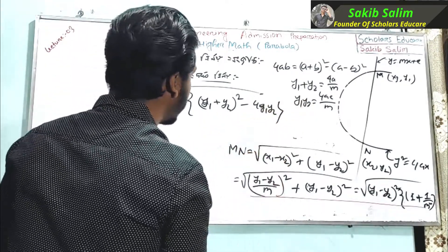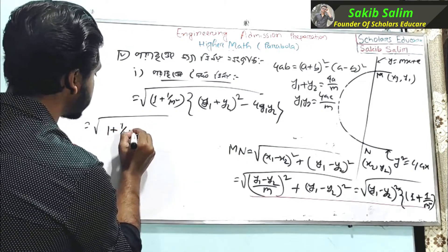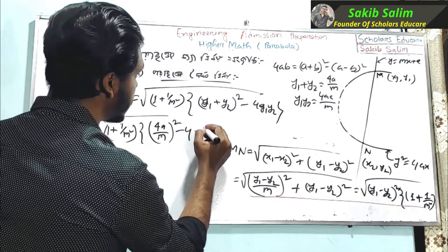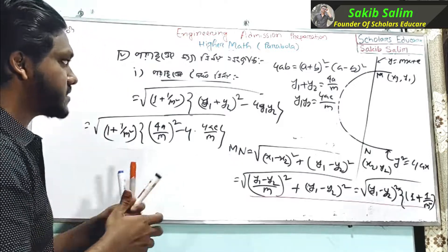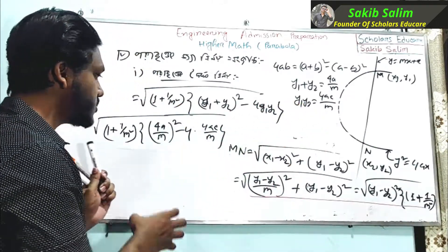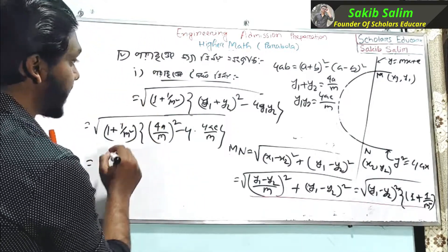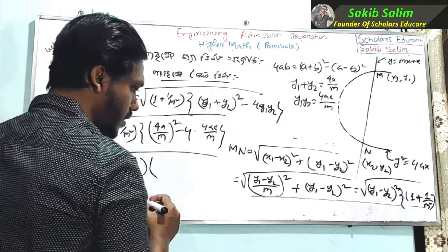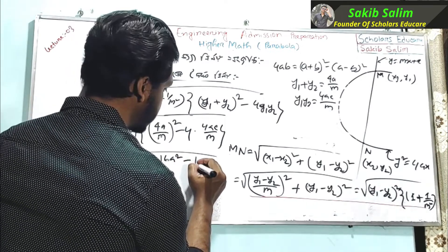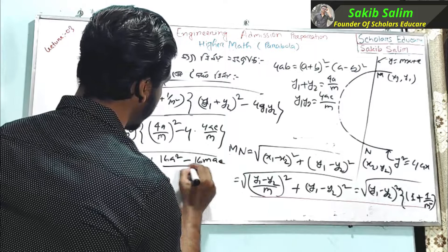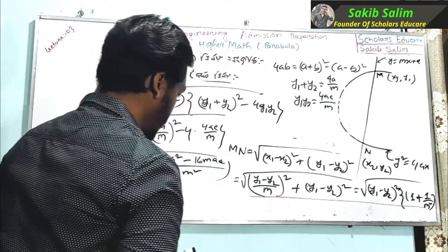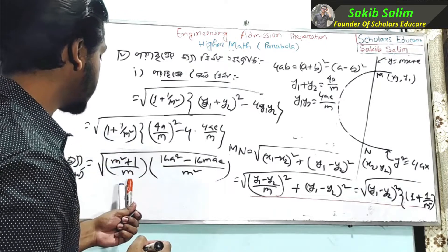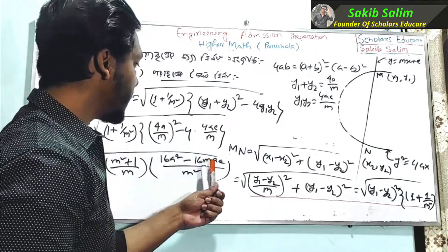The result of y1 plus y2 squared minus 4 times a divided by m, using the y1 plus y2 and y1 y2 values: m squared plus 1 divided by m, into 16a squared minus 16mac divided by m squared.